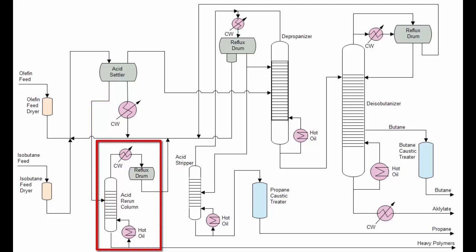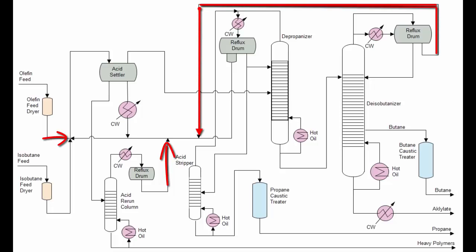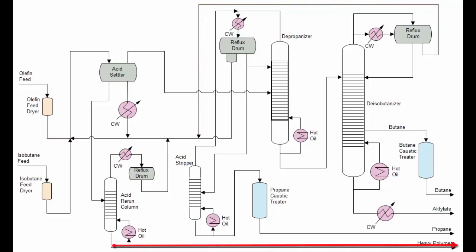It's a small tower with about five trays. The top product from the tower is hydrofluoric acid and is recycled back to be combined with isobutene and olefin feed material. On the other hand, the bottom contains the tar-like material and a hydrofluoric azeotrope.